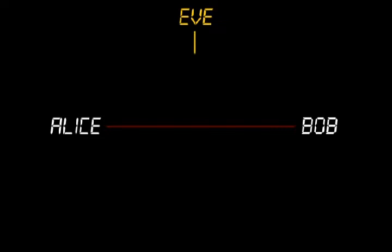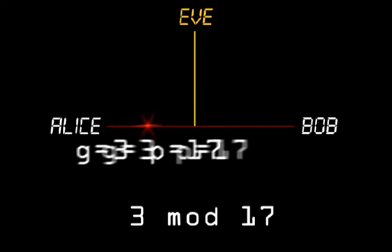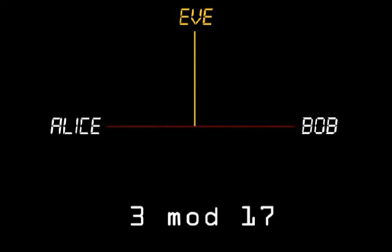Now, this is our solution. First, Alice and Bob agree publicly on a prime modulus and a generator. In this case, 17 and 3.